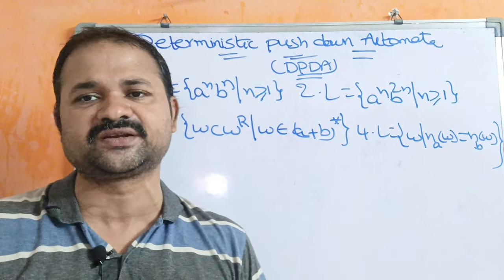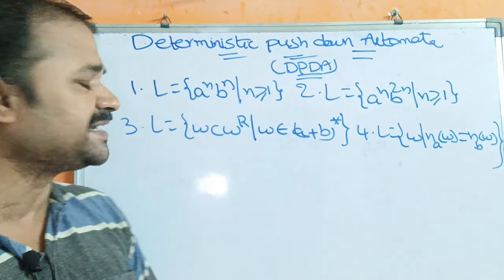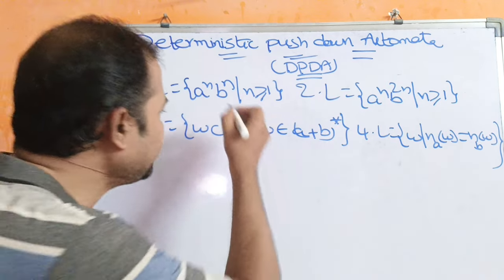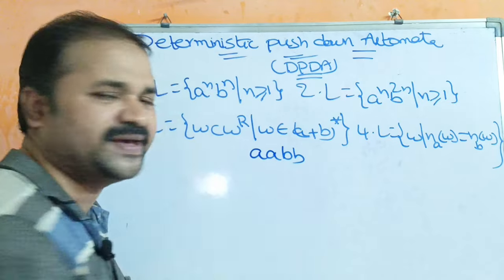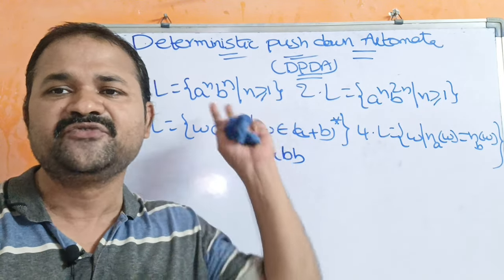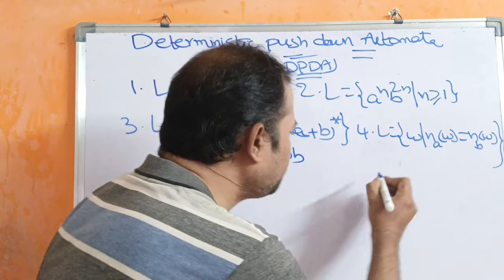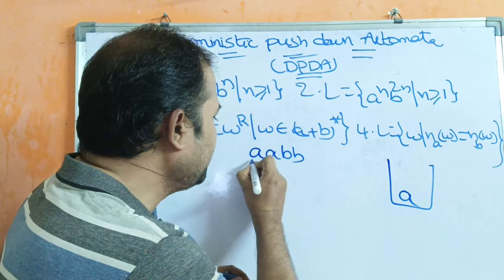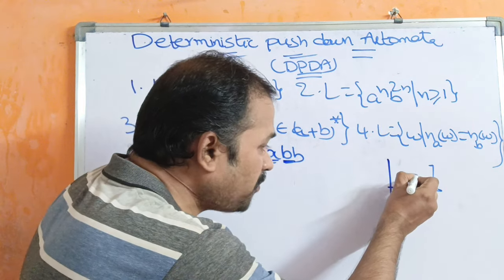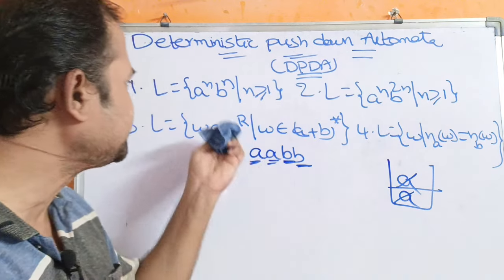I will share the links in the description. If you have any doubts, please refer those videos. For the first example, L = A^N B^N such that N ≥ 1, N number of A's are followed by N number of B's. The logic is very simple: push A's onto the stack, and if you read a B, then pop A from the stack. For example, with string AABB, first A is pushed, second A is pushed. Then on reading B, pop A. On reading the next B, pop A again.